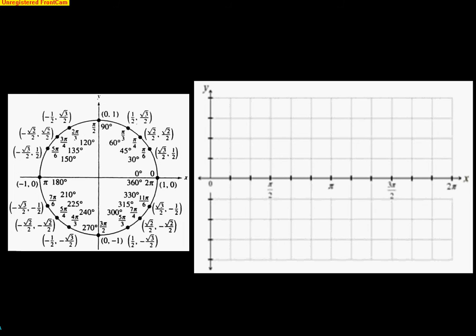I know it seems weird that in our graph we call it the y-value, but we have to understand it's more of an output value. So let's graph this. At 0 degrees, the x-coordinate from the unit circle is 1, so we start at 1. At pi over 6, we drop to about 0.87. At pi over 4, we drop to about 0.7. At pi over 3, we're at about 0.5. At pi over 2, we drop all the way down to 0.